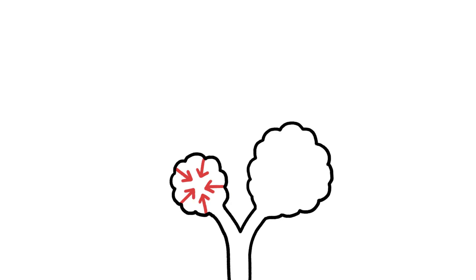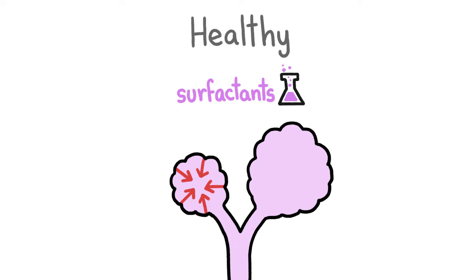Human lungs have essentially the same setup, but in healthy people, alveoli stay properly inflated because they're full of chemicals called pulmonary surfactants that make the small alveoli more stretchy and less squeezy, balancing the pressure between air sacs.